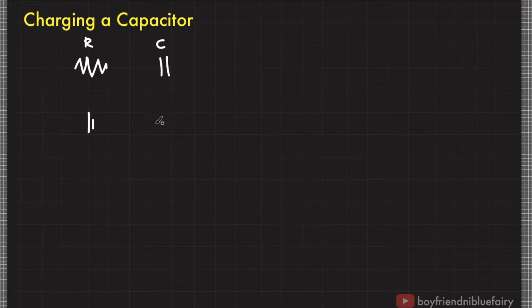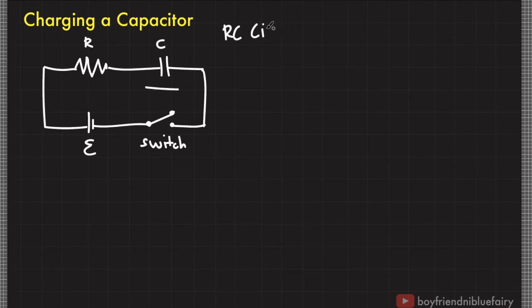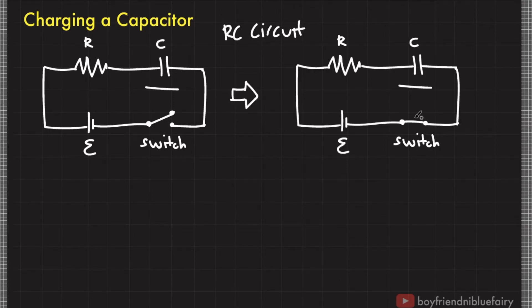When a capacitor is connected to a circuit and current runs through it, it actually takes time before it is charged to a final value Q sub F. This figure shows a simple circuit for charging a capacitor. A circuit that contains both a resistor and a capacitor is called an RC circuit. When the switch is closed, the EMF source will begin charging the capacitor.